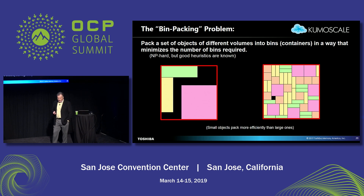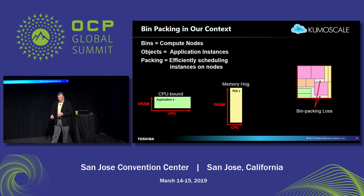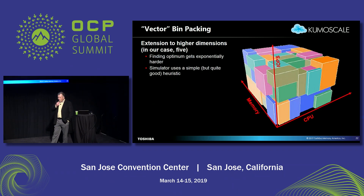Good heuristics are known, and we've used one that gets a very good but not perfect answer. In our context, the bins are compute nodes with a certain amount of memory and compute power. Objects are application instances, and the game is to pack application instances into bins. In a two-dimensional example with DRAM and CPU, you can see a CPU-bound application and a memory hog. The leftover space when we're all done is called bin packing loss — that's the inefficiency from stranding resources in an unusable state. Vector bin packing means we're doing it in more than two dimensions; in our case, five dimensions, which can be extended arbitrarily.